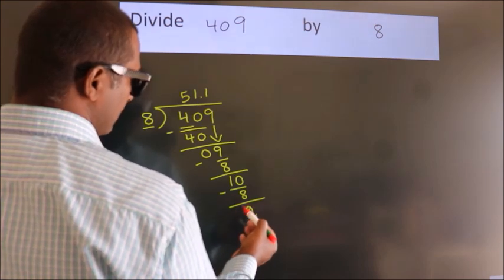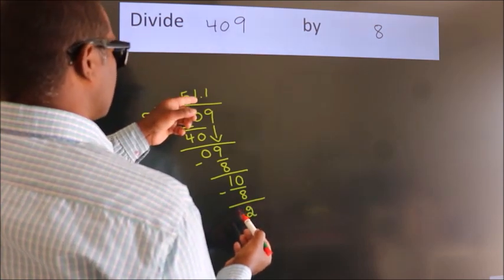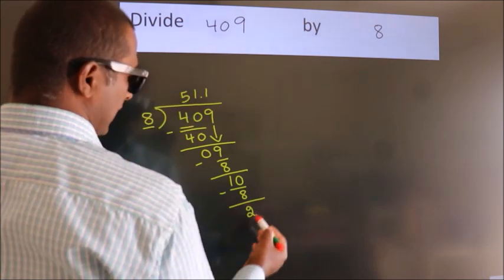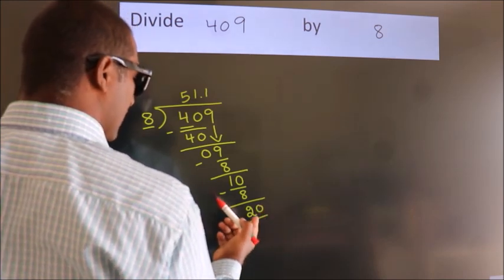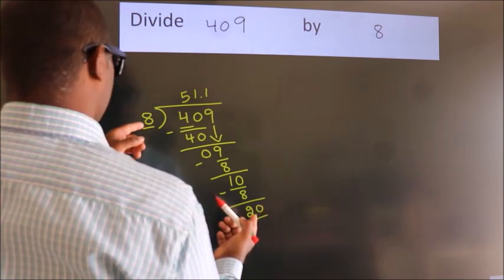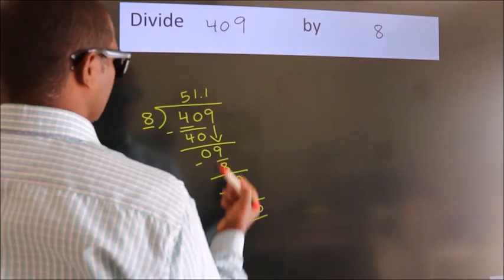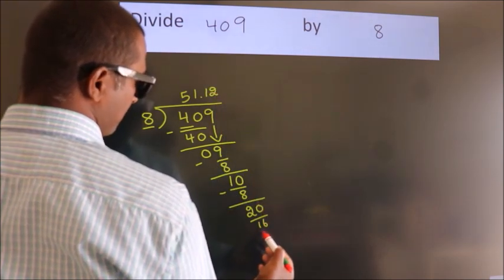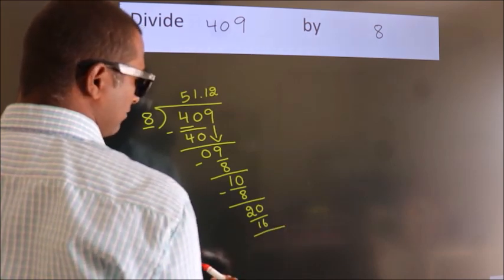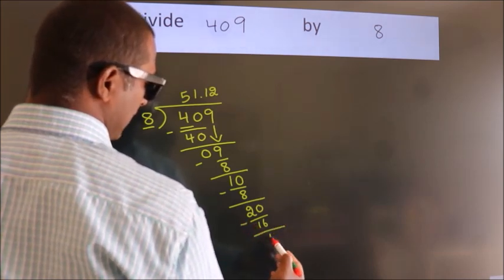After this, we already have the decimal. So directly take 0. So, 20. A number close to 20 in 8 table is 8 to 16. Now we subtract. We get 4.